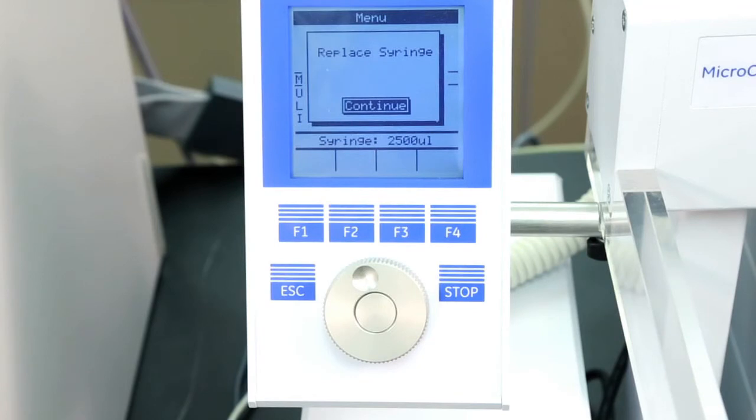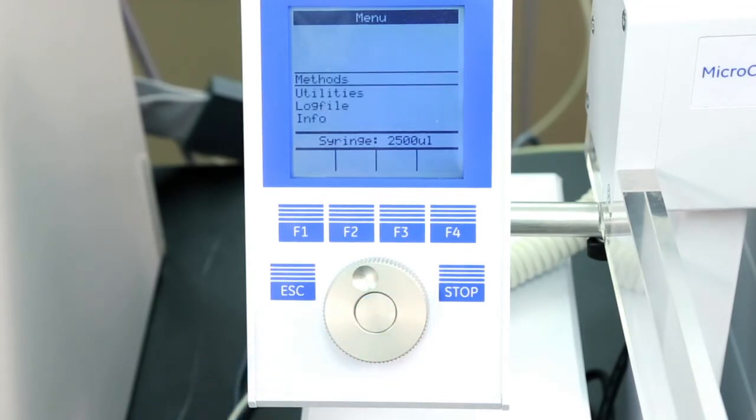After the syringe has been inserted, press the enter button on the console and then press the home button. The plunger will then move down until it hits the mechanical stop. This position is stored as the syringe's zero volume position and then the injection unit returns to its home position.